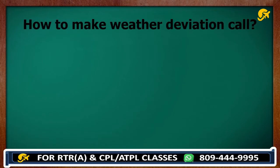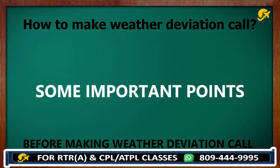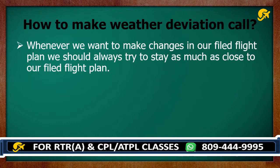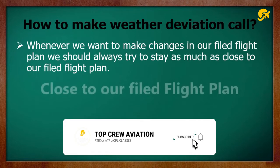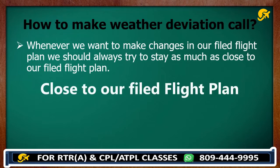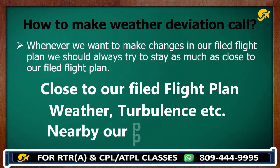Let's recap some important points we should keep in mind before making a weather deviation call. Number one: whenever we want to make changes in our filed flight plan, we should always try to stay as close as possible to our filed flight plan. Because ATC is aware of our flight plan, so we are safer there. Also, if we recover from any circumstance like weather or turbulence, we can easily rejoin our route.